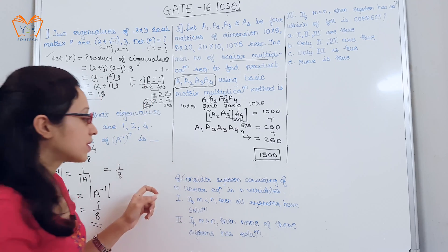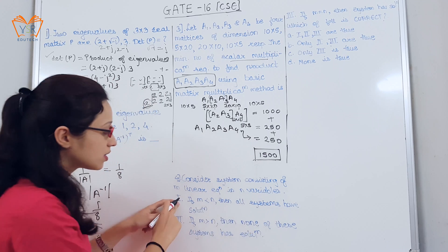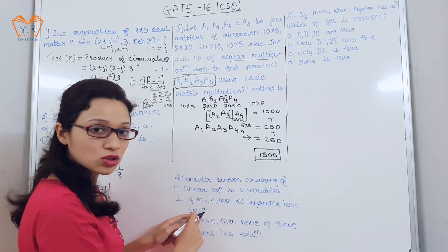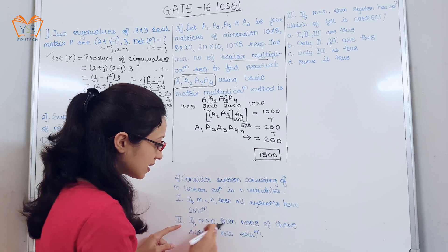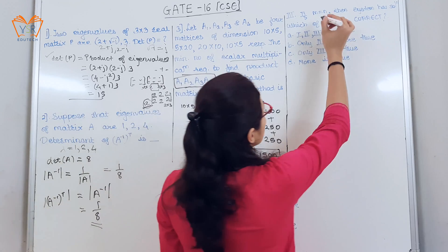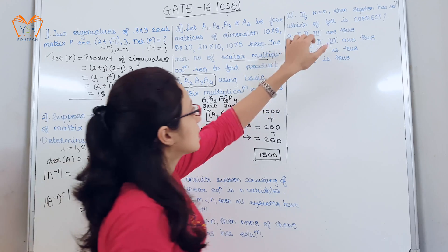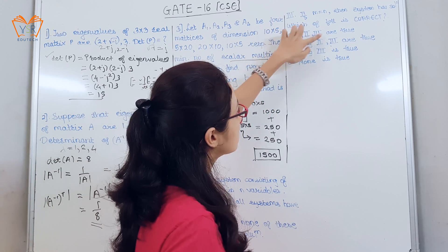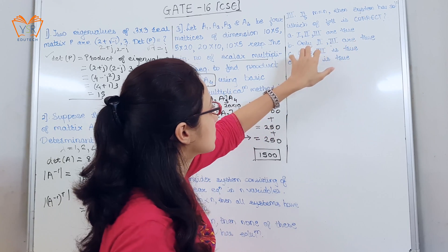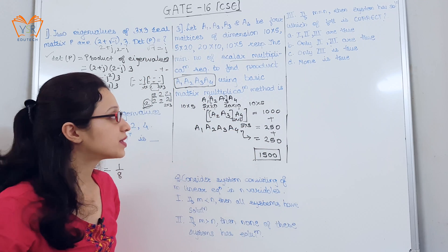Next example: consider a system of M linear equations in N variables. Statement 1: if M is less than N, the system will have a solution. Statement 2: if M is greater than N, none of the systems have a solution. Statement 3: if M equals N, the system has a solution. Options: A — all three are true; B — only 2 and 3 are true; C — only 3 is true; D — none are true.